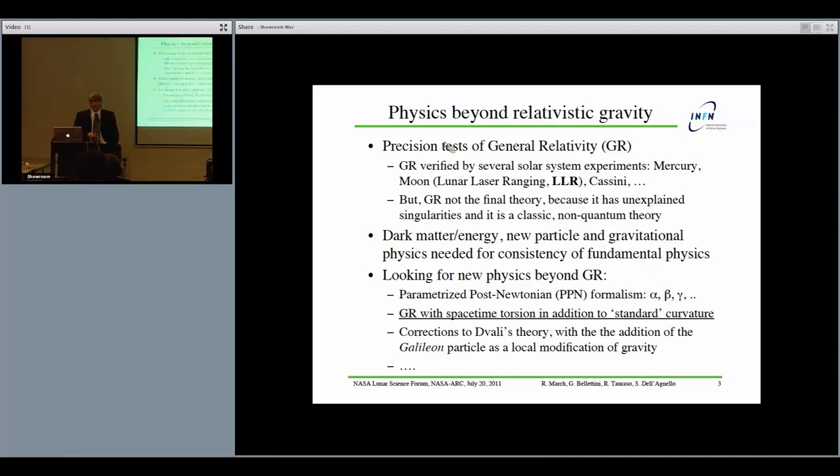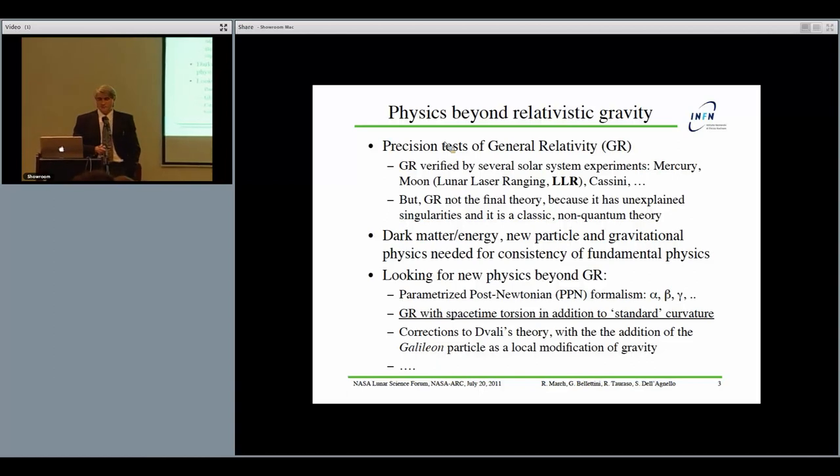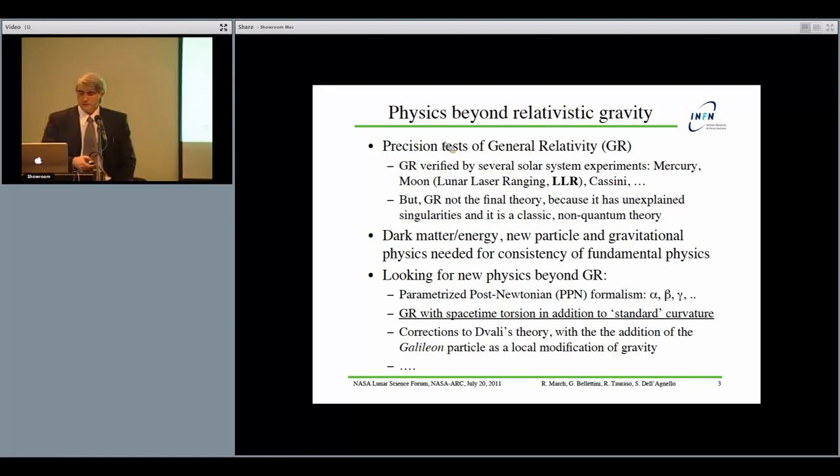It is generally not believed that general relativity is the final theory of gravity because it has unexplained singularities and because it is a classic non-quantistic theory. There are many activities looking for dark matter, dark energy, new particle physics, and new gravitational physics which are needed to make modern physics consistent, particularly in the quantum regime. This is already done in the parameterized post-Newtonian formalism shaped in the 70s with the famous parameters alpha, beta, and gamma. Gamma is the curvature of space-time measured with Cassini. We are studying a model in which there is a space-time torsion in addition to curvature.